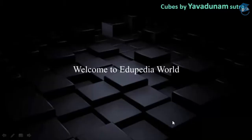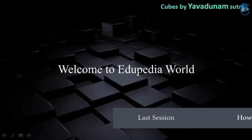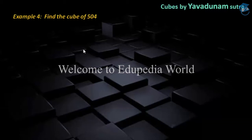Hi friends, welcome to ADPD World, this is Urun Ganga. In our last session we have seen an example how to find the cube of a given number by using Avadunam Sutra which is very near to the base 400. But now in this session we are going to see a new example: how to find the cube of a given number by using Avadunam Sutra which is very near to the base 500. The example I am going to take in this session is: find the cube of 504.